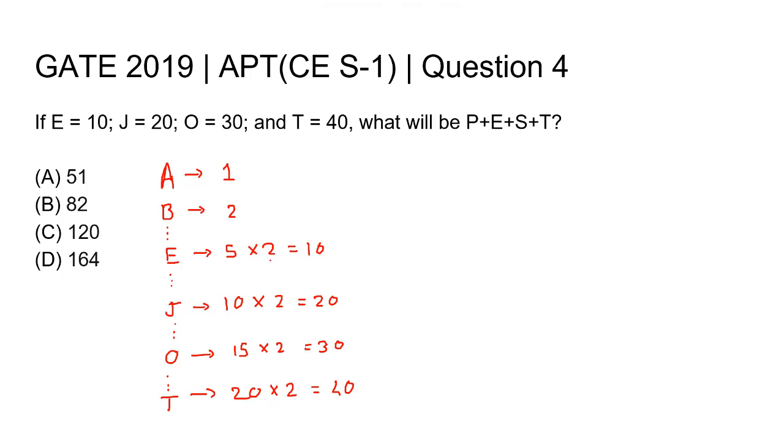Now to find the value of P plus E plus S plus T, we want to find the value associated with P and with S. We can find out that P is the sixteenth letter of the alphabet, so the number associated with P will be 16 times 2, that is 32.